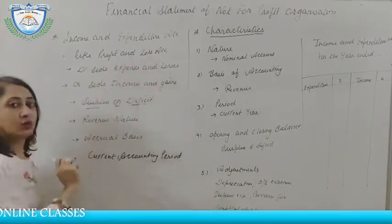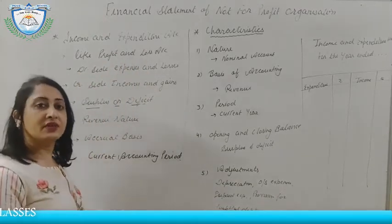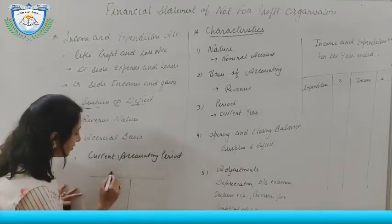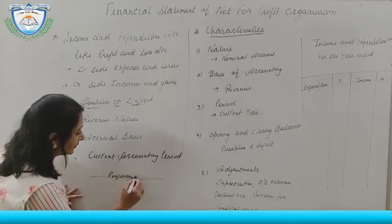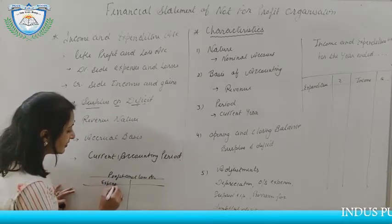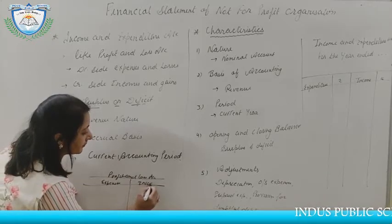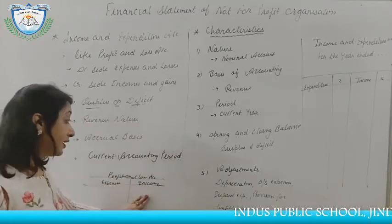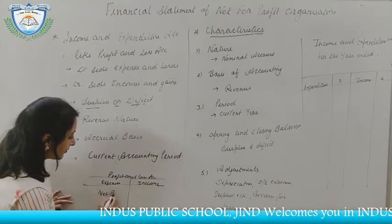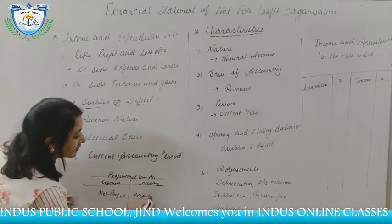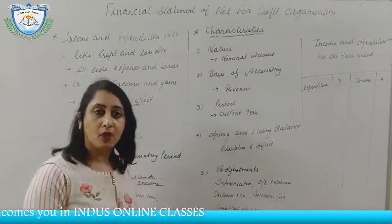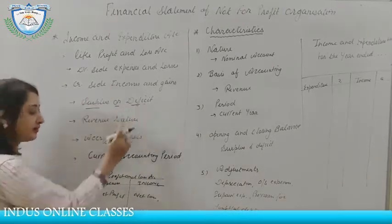It is just like the profit and loss account as we prepared in class 11th in final accounts. On the debit side, we show expenses, and on the credit side, income. But unlike profit and loss account where we find out net profit or net loss, in not-for-profit organizations the motive is not profit, so we just find out surplus or deficit.